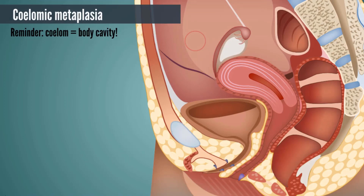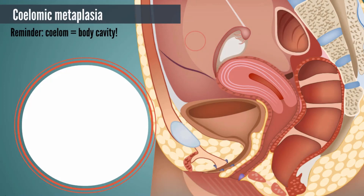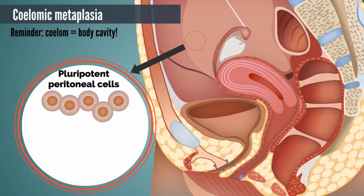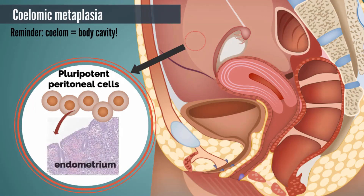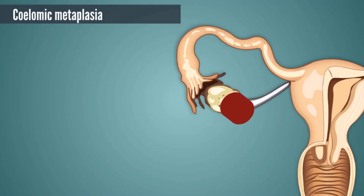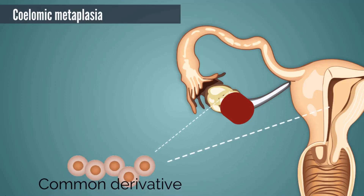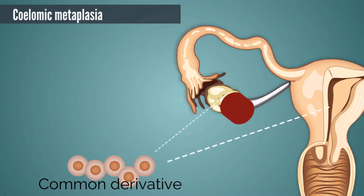One way to remember the celomic metaplasia theory is to remember that 'celome' means body cavity. This theory suggests that cells in the peritoneum are pluripotent and can undergo transformation to tissue identical to endometrium. This may explain endometriomas of the ovary, since both the ovary and Müllerian ducts which give rise to the endometrium are derived from the same epithelium. This also helps explain how some girls have endometriosis prior to menarche.